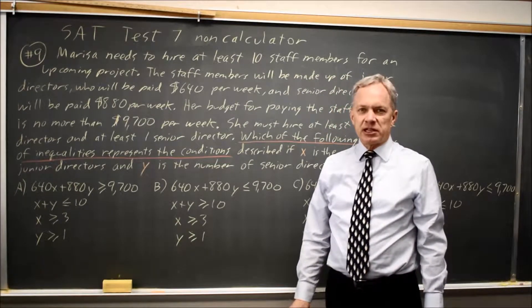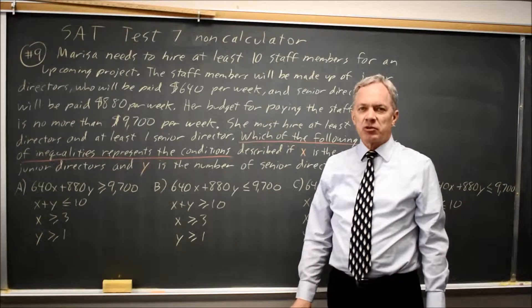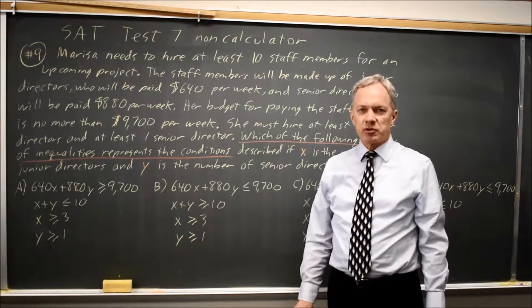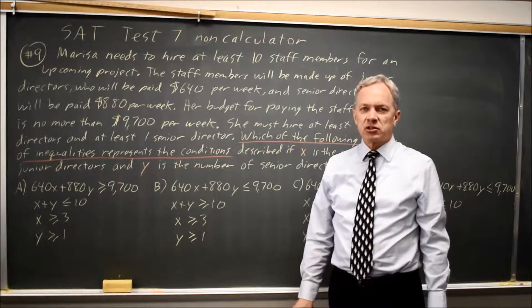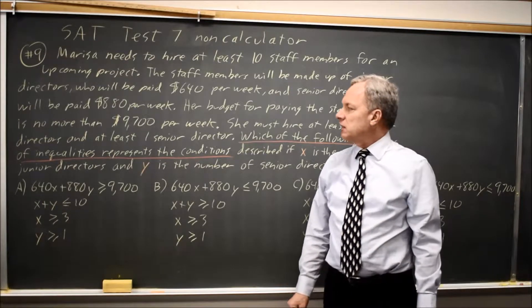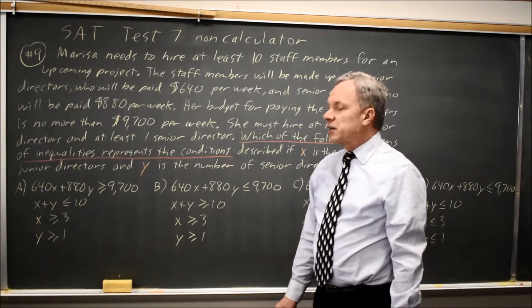And then we have four answer choices, each of which is a system of inequalities. College Board almost always asks this type of question, where rather than ask you to solve the system of inequations or system of inequalities, they're just asking you to write it.